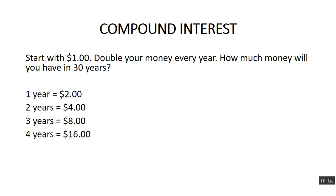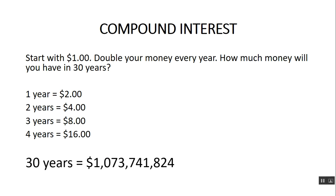Now let's do a silly example here. Let's say you have a dollar and you double your money every year. How much money will you have in 30 years? After one year your money doubles — you have $2, then $4, then $8, and so on. Well, you may not believe it, but after 30 years you would be a billionaire — you'd have $1,073,741,824.